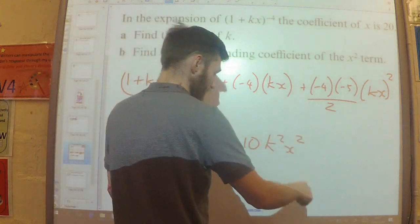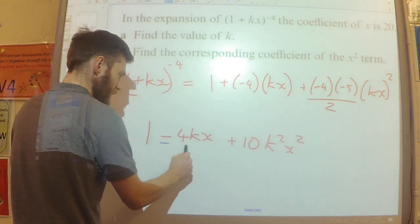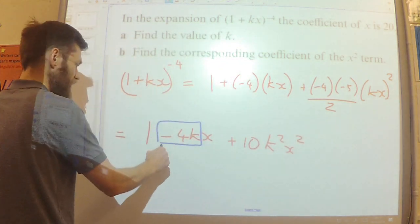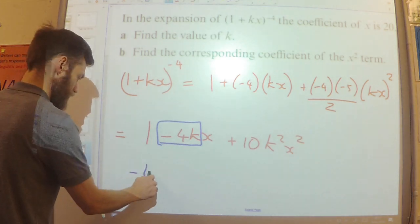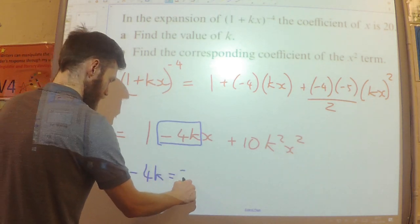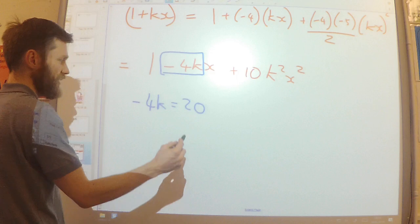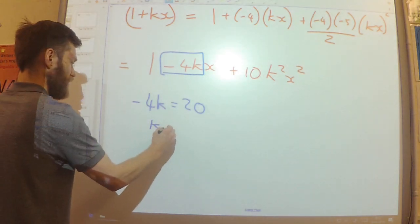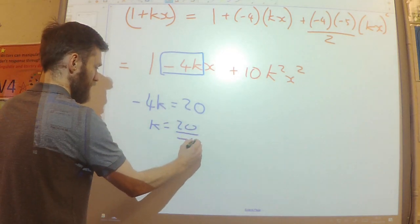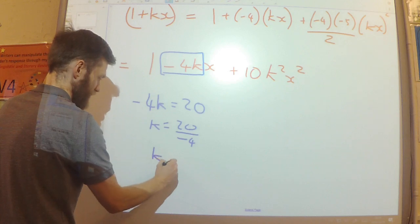Okay, now I'm told that the coefficient of x is 20. So that means that this minus 4k is equal to 20. Therefore, k equals 20 divided by minus 4, which is 5.